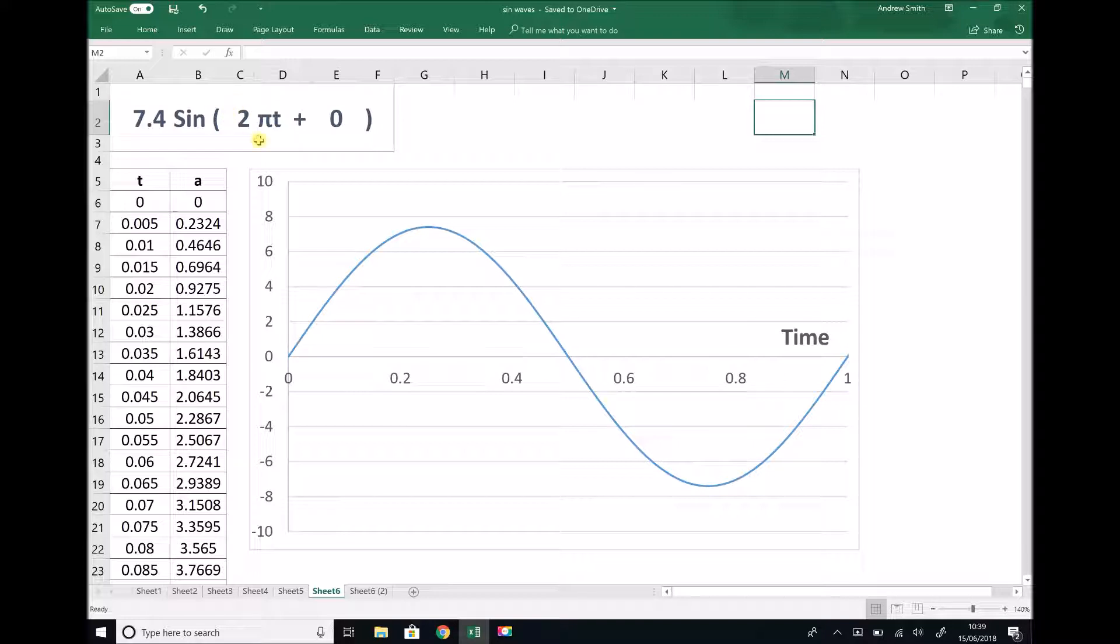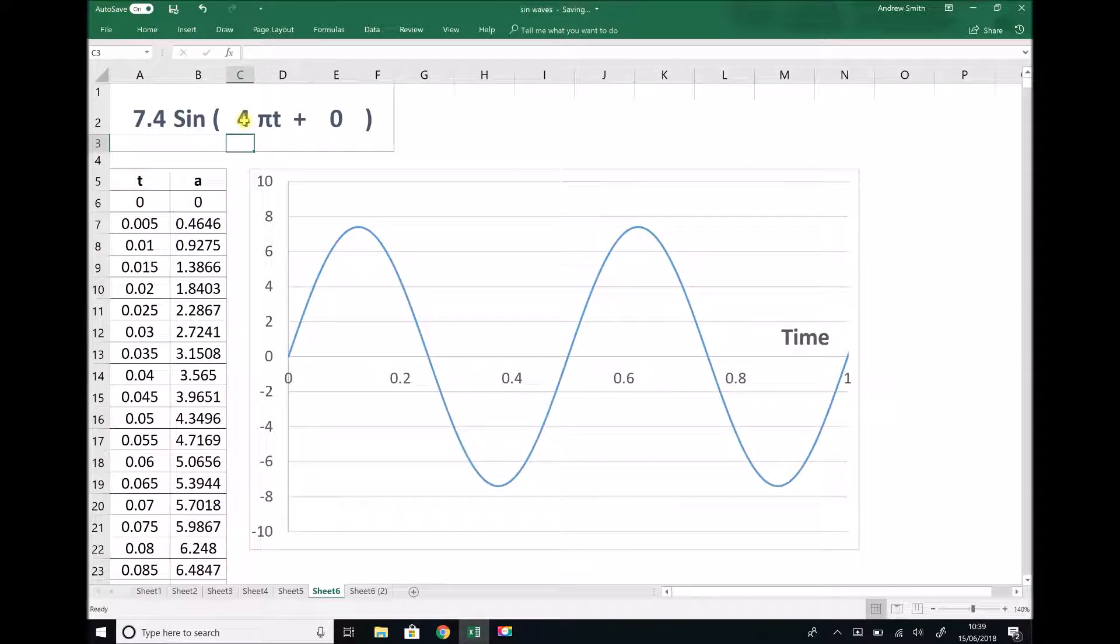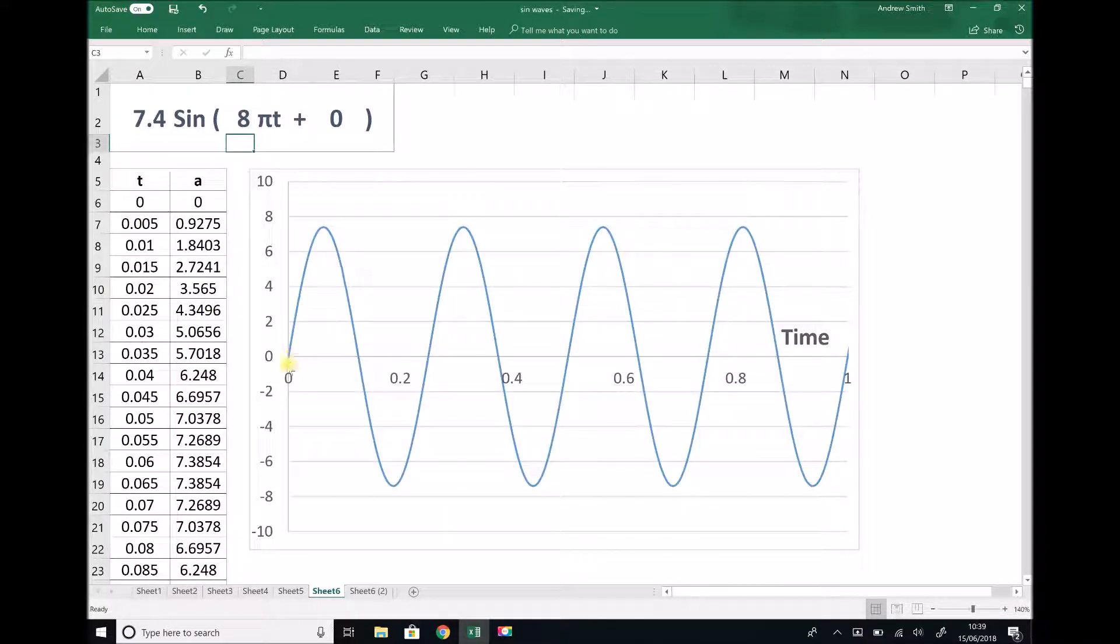If we were to change this number to 4π, then we see some of the same rules that we've seen previously. Now, instead of one cycle every second, we now have two cycles every second. If we change that number to eight, we no longer have two cycles. Instead, we have four cycles.